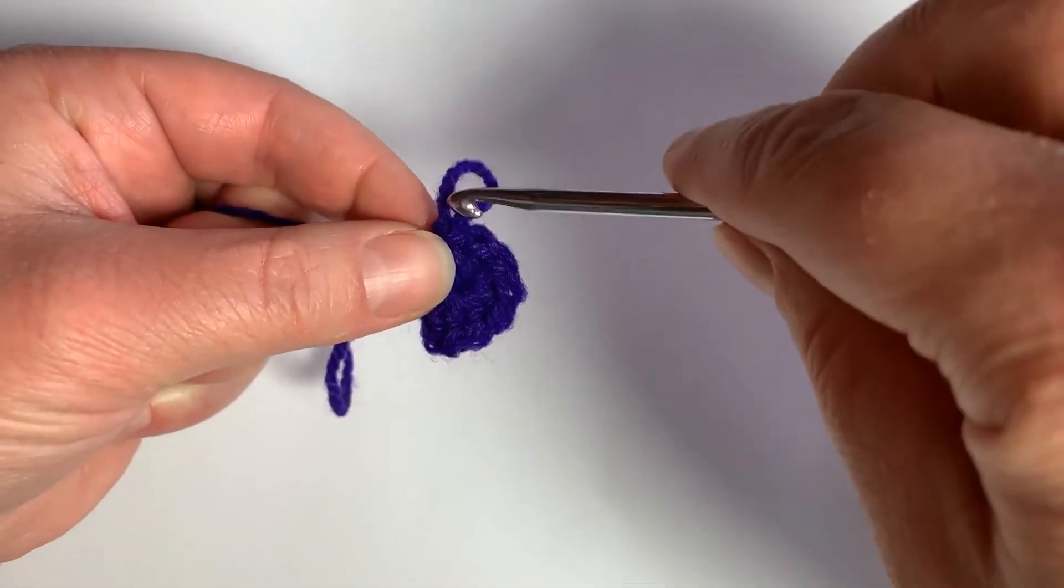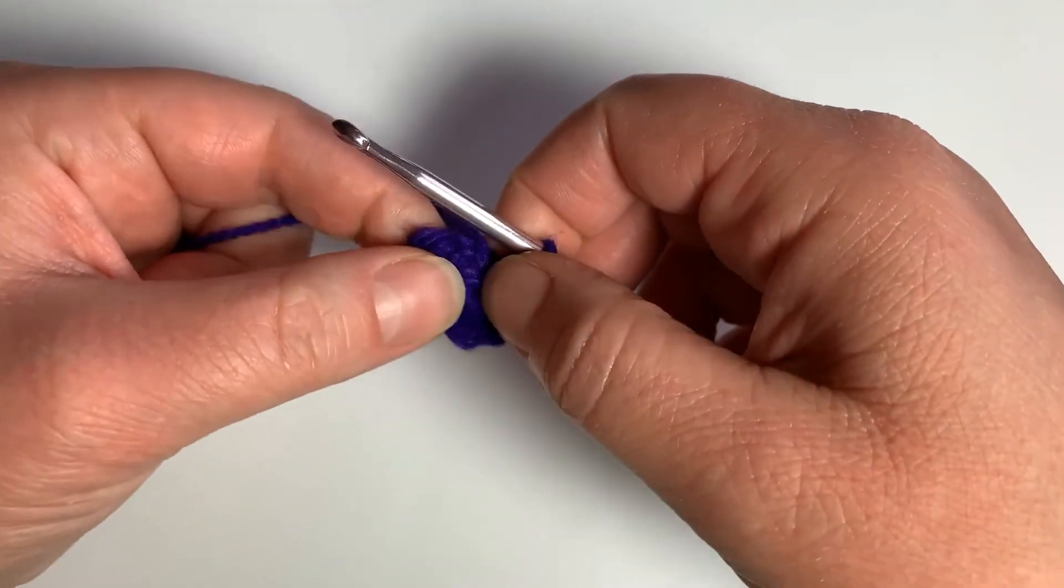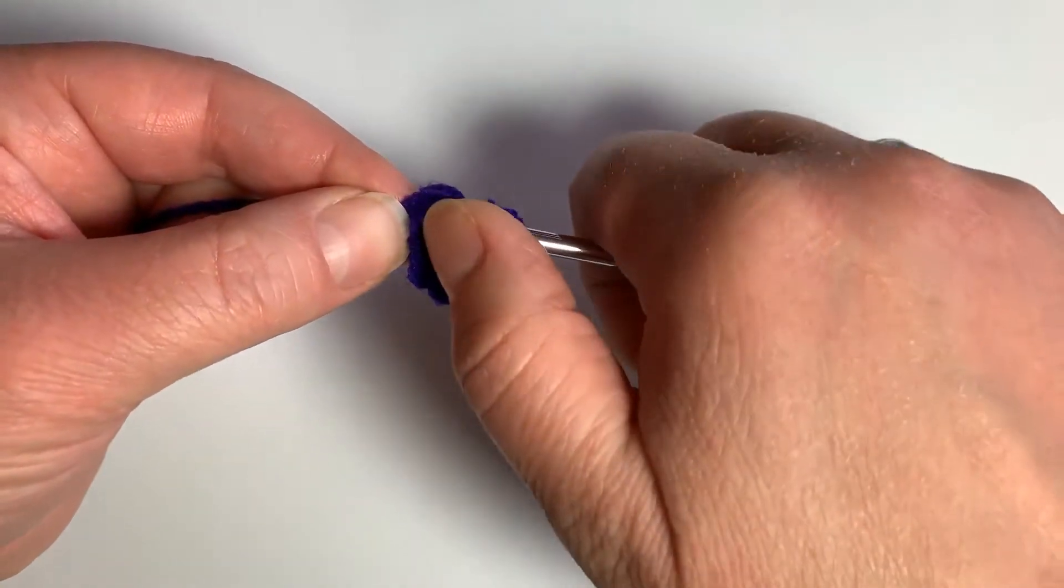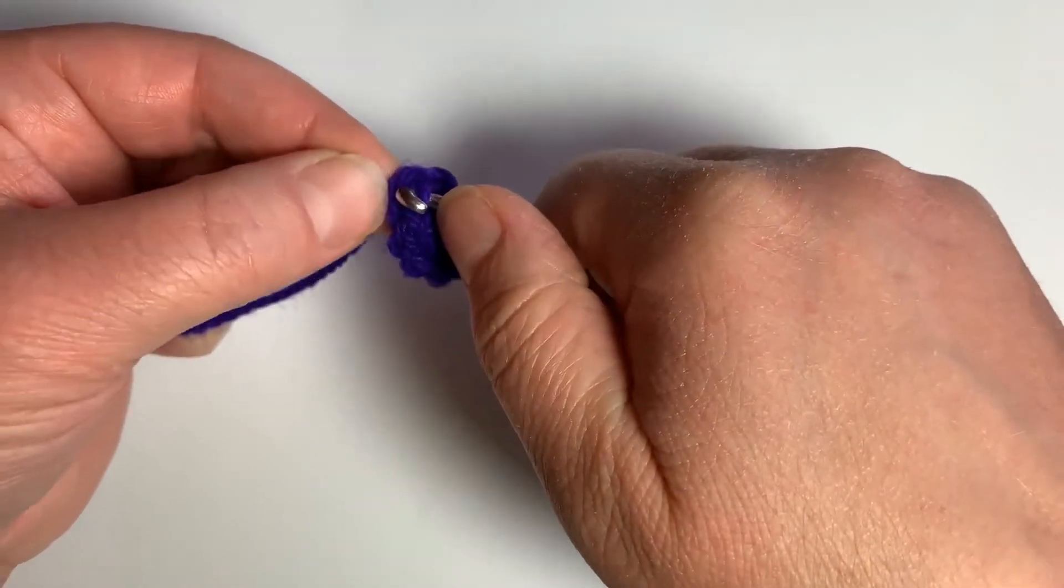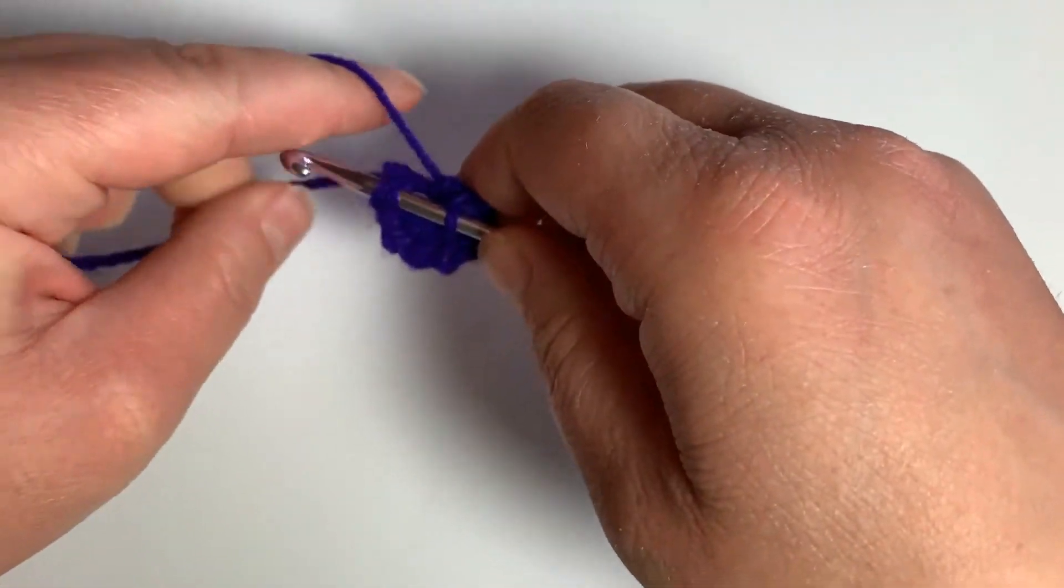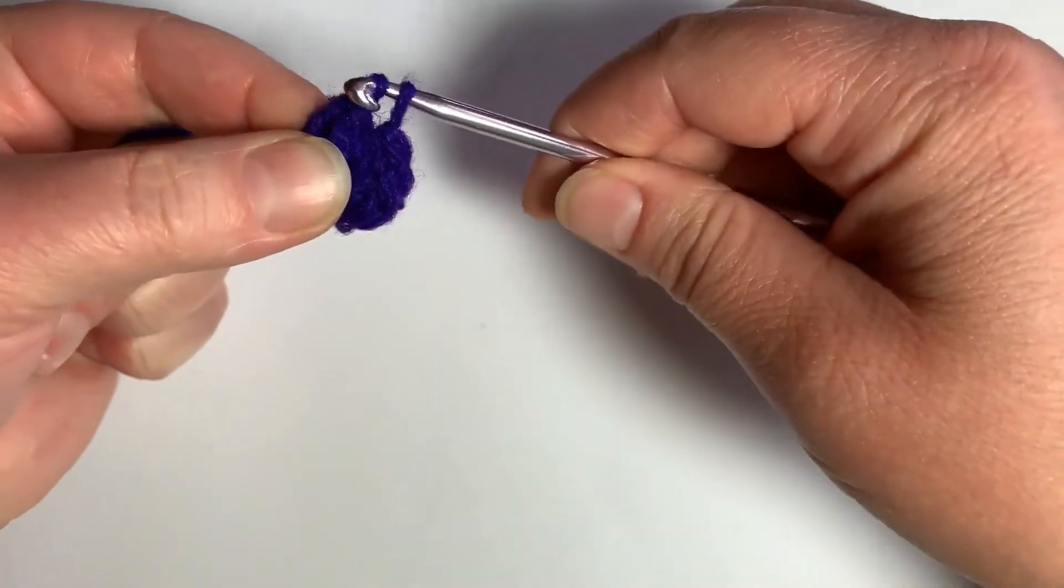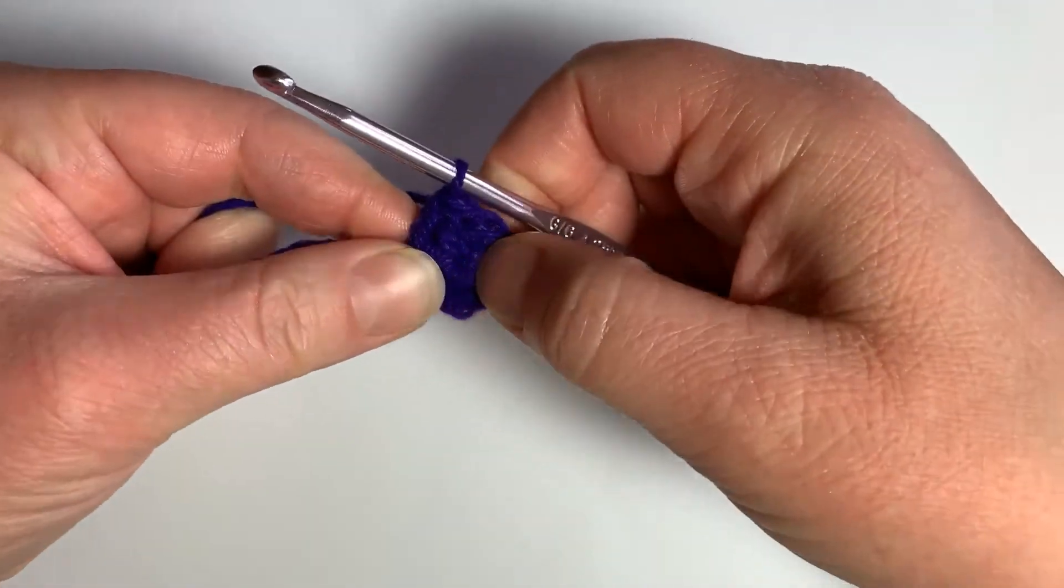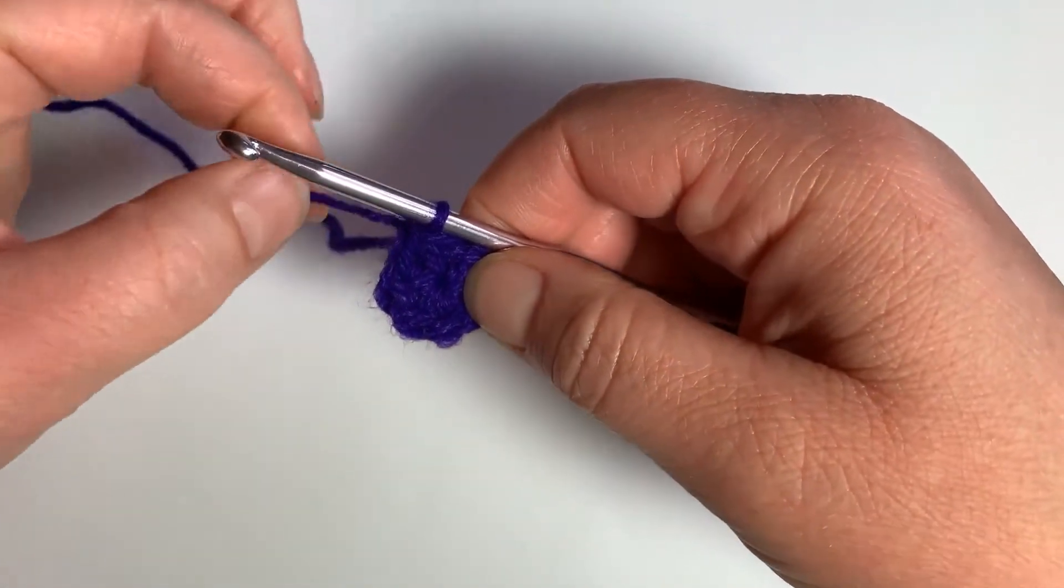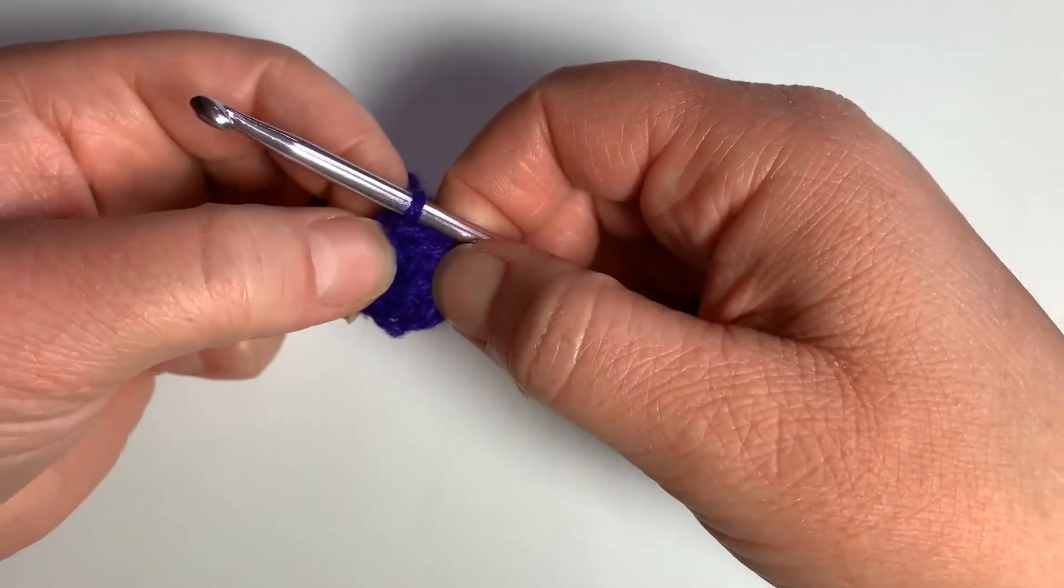And then you would simply slip stitch if you're continuing on to your project. So you would slip stitch into this first half double crochet. Or if you're changing colors, you could do an invisible join or a slip stitch cut your tail. So that's how you do it with a starting chain.